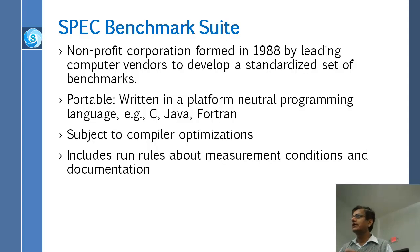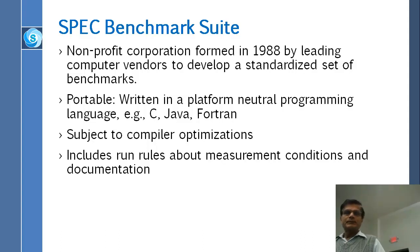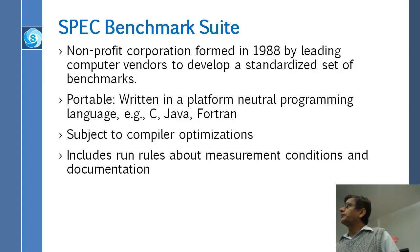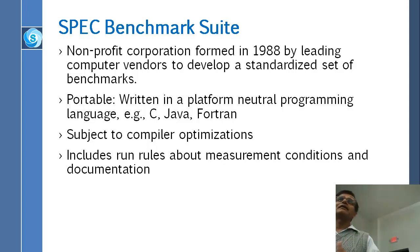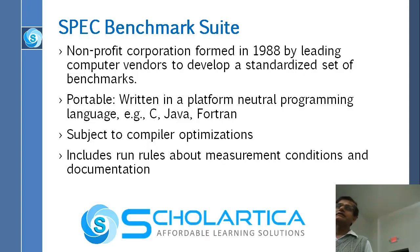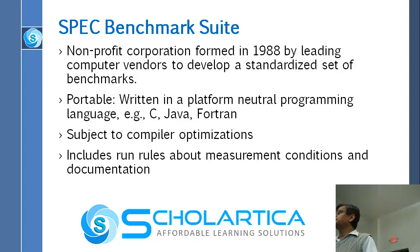In the next few slides, I want to cover the SPEC benchmark suite. SPEC was formed in 1988. They develop portable benchmarks written in platform-neutral programming languages like Java, Fortran, or C, which run on every system. You can take the C or Fortran code and compile it for your system. However, because they're high-level code, they are subject to compiler optimizations. SPEC has written very detailed rules about which compiler optimization flags you should use, and there is detailed documentation on how to run these benchmarks.